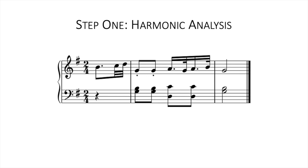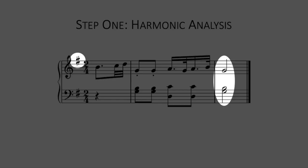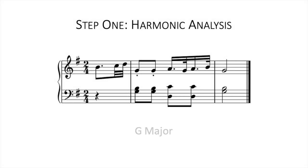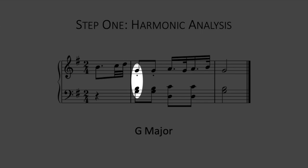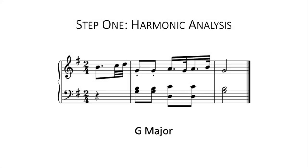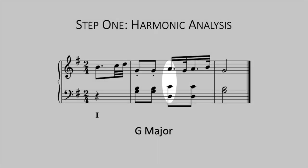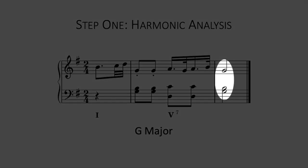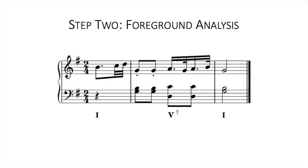We start by doing a simple harmonic analysis of the piece. First, we find the key, which in this case is G major. Next we add the Roman numerals. We start off on the tonic chord of G major, then move to the D major 7, which is of course the dominant, and then resolve on the tonic G major. Simple enough so far.